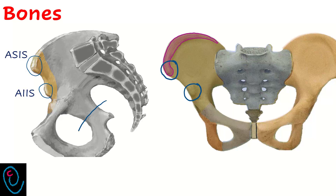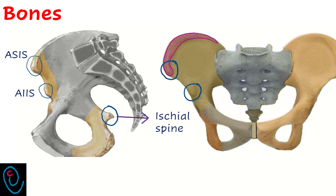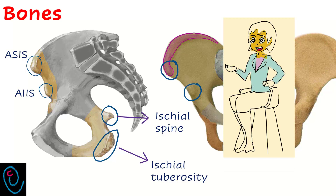The ischium is the thick lower part of the hip bone. It has two important bony prominences. One is a small pointed triangular projection called the ischial spine. The other one is a broader prominence known as the ischial tuberosity. During sitting, body weight is placed on the ischial tuberosity.